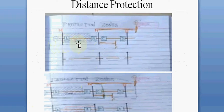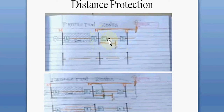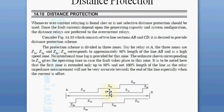Relay A covers 80% of line AB in Zone 1. If there are multiple lines coming out from this substation, Zone 2 of relay A will cover 50% of the shortest adjoining line from that bus. Zone 3 of relay A covers the remaining section of line CD — that is, from point A all the way to point D.